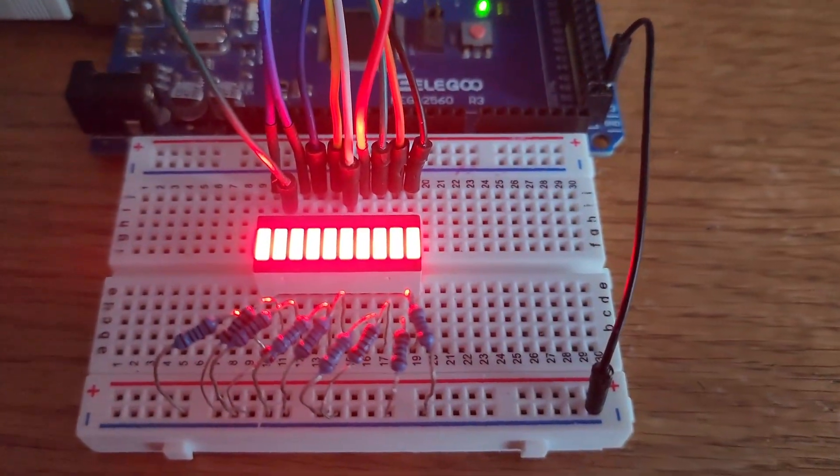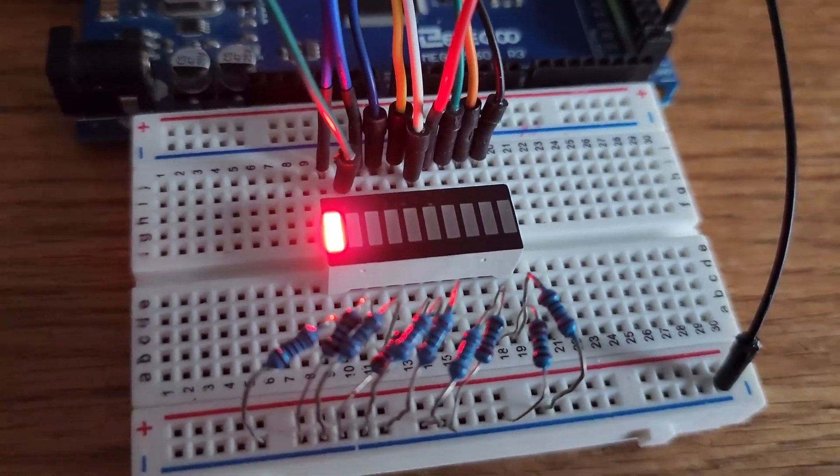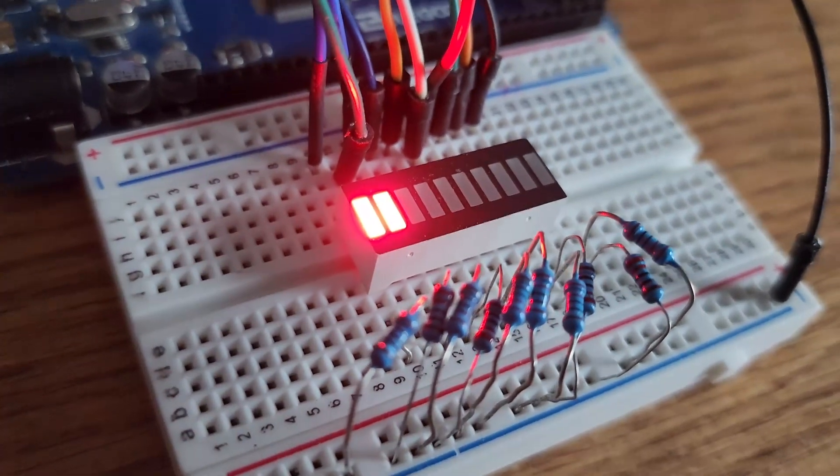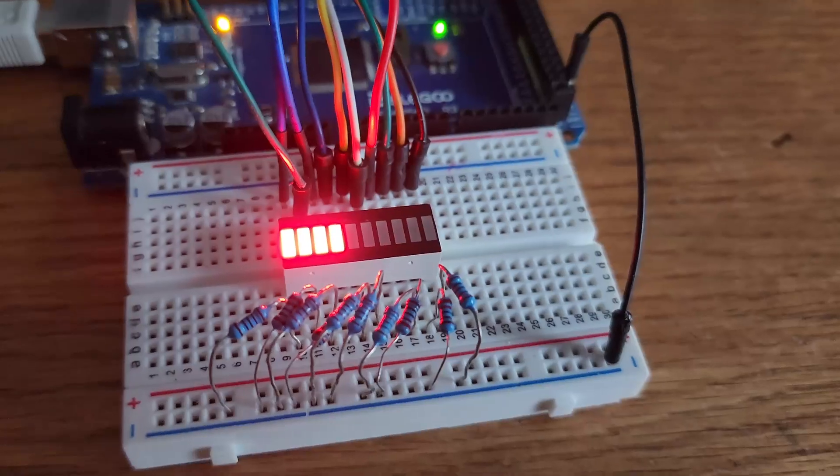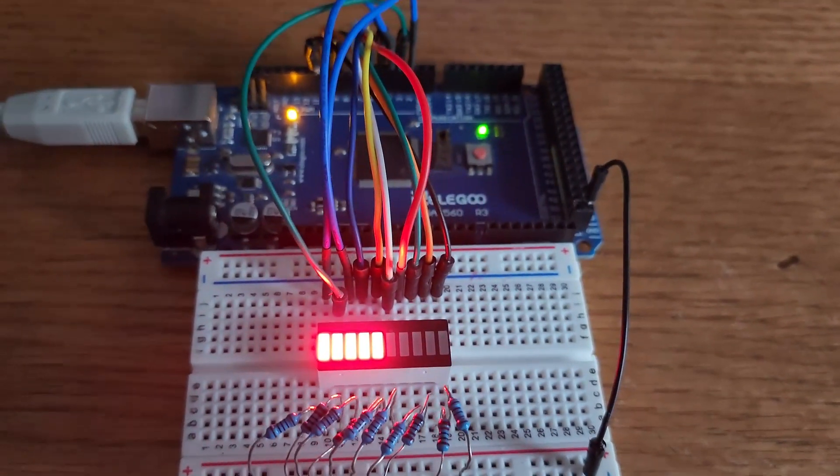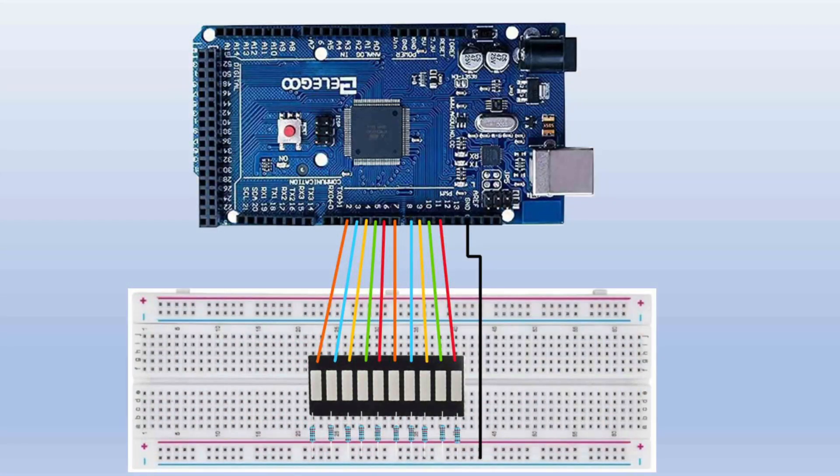In this code we sequentially light up each LED in the bar graph every 6 seconds. After lighting up all the LEDs it resets, turning all LEDs off and starting the sequence again. This creates a repeating pattern where the LEDs illuminate one after another over a minute.